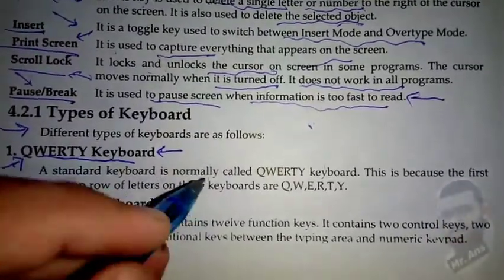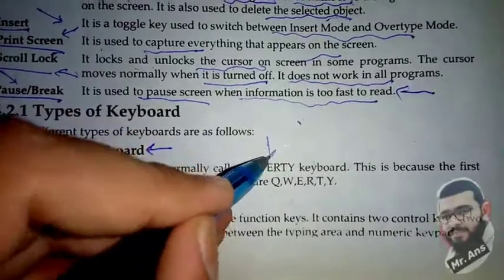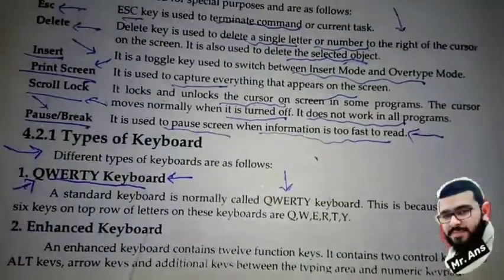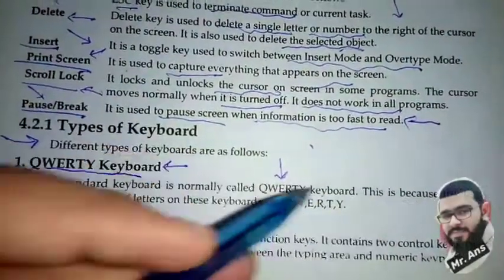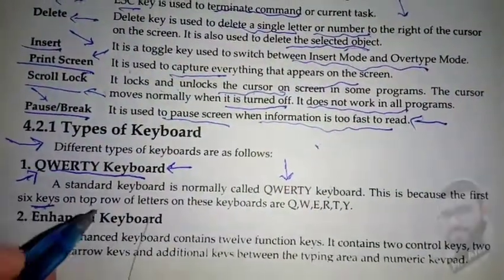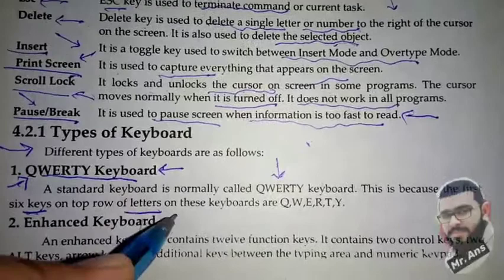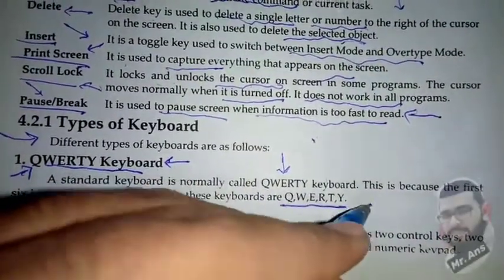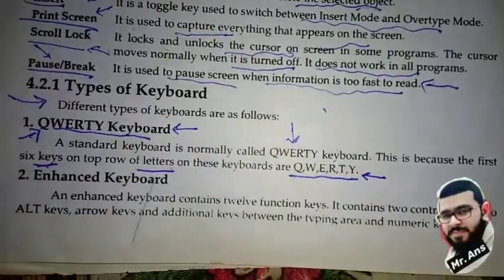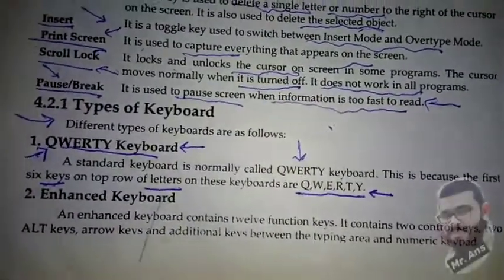A standard keyboard is normally called QWERTY. This is because the first six keys on the top row of letters on these keyboards are Q, W, E, R, T, Y. So the first line of letters starts with QWERTY.